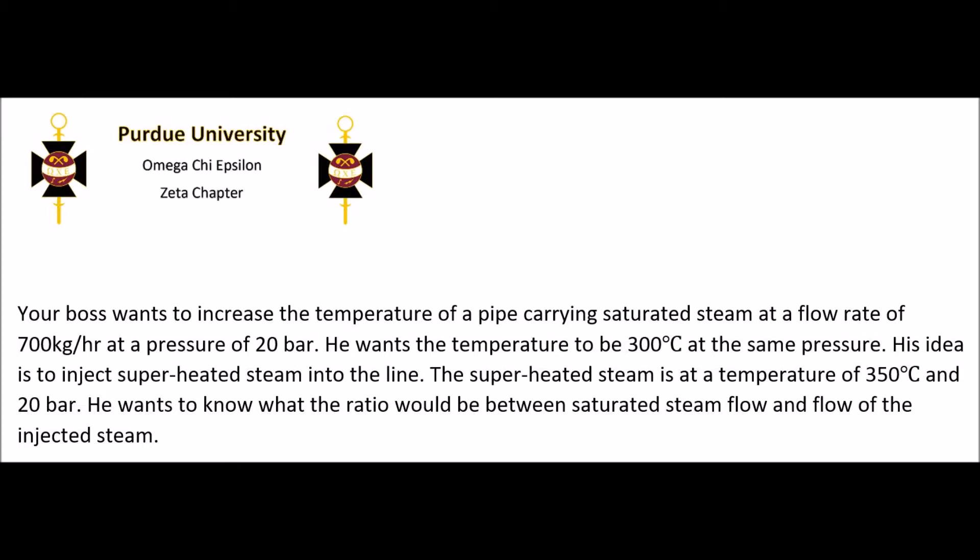Your boss wants to increase the temperature of a pipe carrying saturated steam at a flow rate of 700 kilograms per hour at a pressure of 20 bar. He wants the temperature to be 300 degrees Celsius at the same pressure. His idea is to inject superheated steam into the line, and the superheated steam is at a temperature of 350 degrees Celsius and a pressure of 20 bar. He wants to know what the ratio would be between the saturated steam flow and the flow of the injected steam.